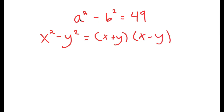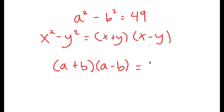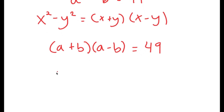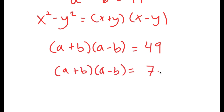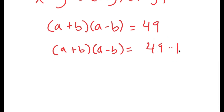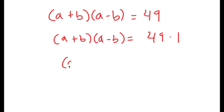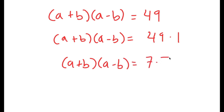In this case, a squared minus b squared — a is x and b is y — so this turns into a plus b times a minus b is equal to 49. From here, I can rewrite 49 as 49 times 1. And this I can also rewrite as 7 times 7.